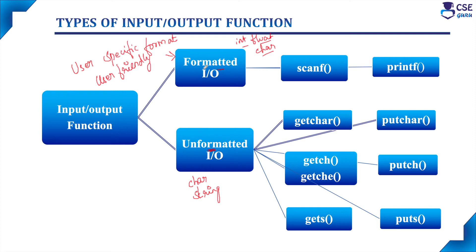Considering the formatted input/output functions: scanf is the formatted input function and printf is the formatted output function. If you want to accept data and provide input to C code, we use the scanf function. If you want to display output on the output screen, we use the printf function. These two functions are the most commonly used functions in C programs.